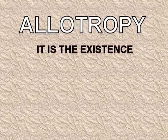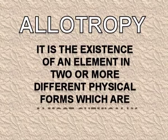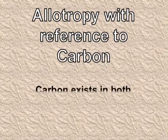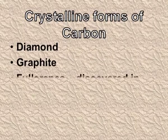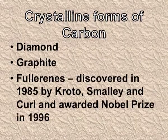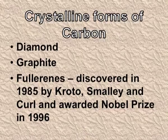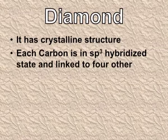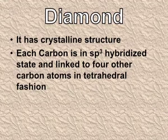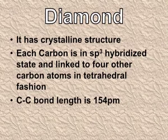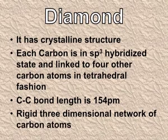Allotropy is the existence of an element in two or more different physical forms which are almost chemically the same. Carbon exists in both crystalline and amorphous forms. The crystalline forms of carbon are diamond, graphite, and fullerenes, which were discovered in 1985 by Kroto, Smalley, and Curl, who were awarded the Nobel Prize in 1996. Diamond has a crystalline structure where each carbon is sp3 hybridized and linked to four other carbon atoms in a tetrahedral fashion. The carbon-carbon single bond length is 154 picometers, giving a rigid three-dimensional network of carbon atoms.